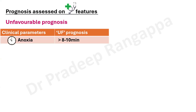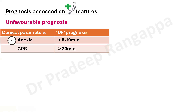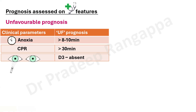There are certain parameters identified as indicators of poor prognosis. Intuitively, duration of anoxia greater than 8 to 10 minutes is associated with unfavorable prognosis. Duration of CPR more than 30 minutes obviously has very poor prognosis and bad outcome. Pupillary reaction to light at day 3 — if it is absent — is a poor prognostic marker. All studies consistently show that absent pupillary light reflex at day 3 is very conclusively associated with bad prognosis.